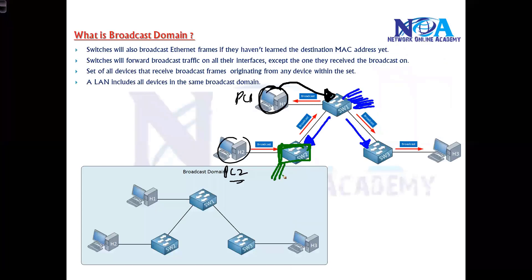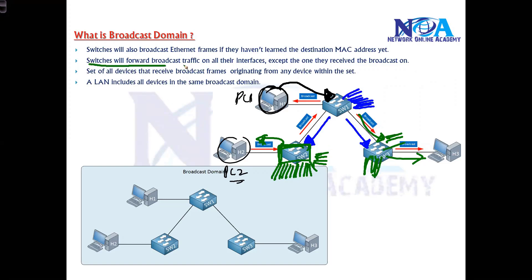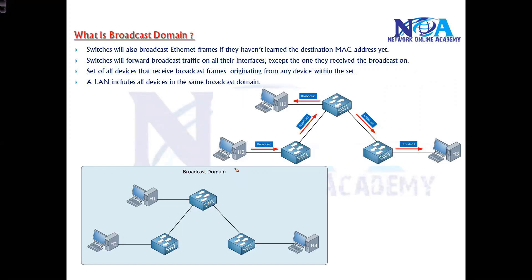Assuming Switch 2 also has no entry, it will broadcast out of all its interfaces as well. By default, when a switch receives a broadcast it will forward it out of all interfaces. The boundary defining how far that broadcast travels is what we call the broadcast domain.